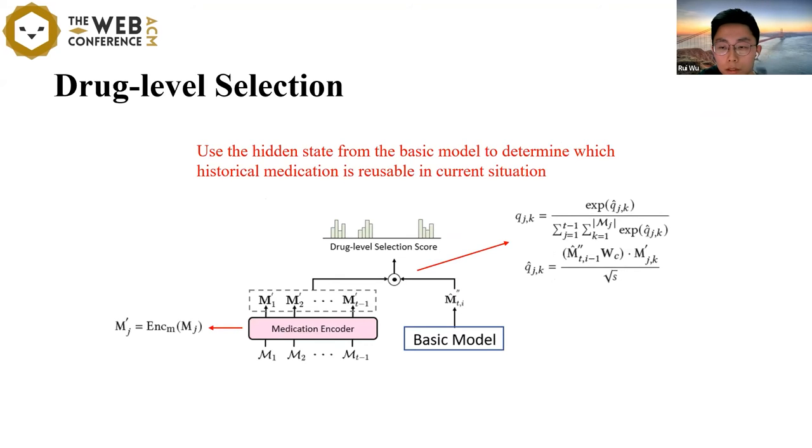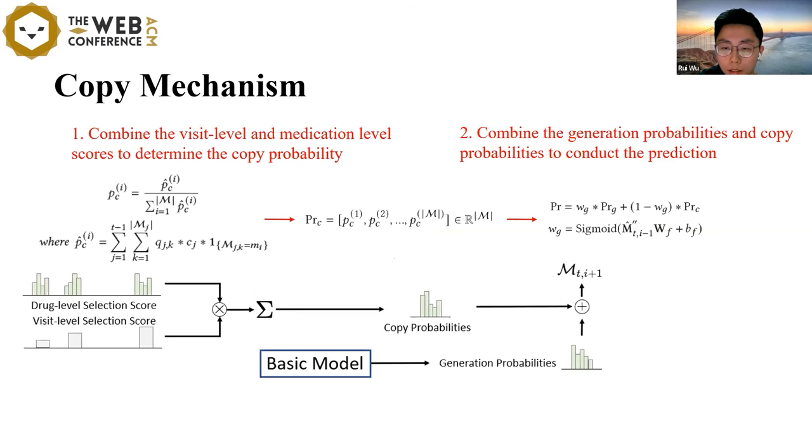Second, a medication-level selection is used to pick a particular medication. We use the hidden state from the basic model, which comprehensively encodes the information of diagnosis, procedures, and recommended medications, to determine which historical medication is reusable in the current situation. After this process is finished, we combine the visit-level and medication-level scores to determine the copy probability of each medication in past visits. Finally, we combine the generation probabilities and the copy probabilities to conduct the final prediction. We repeat the above process to copy the reusable medications iteratively to form the complete recommendation medication list.